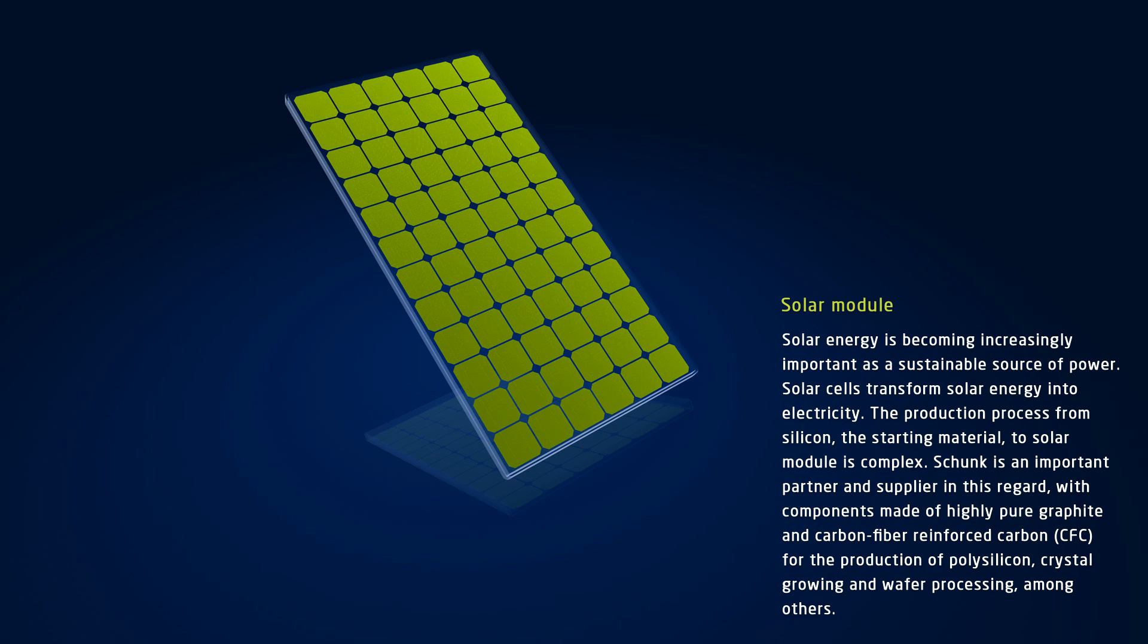All over the world, demand for solar energy as a sustainable source of power is increasing. Solar cells are used to transform solar energy into electricity. Silicon is the basic material in most of the cells manufactured today.